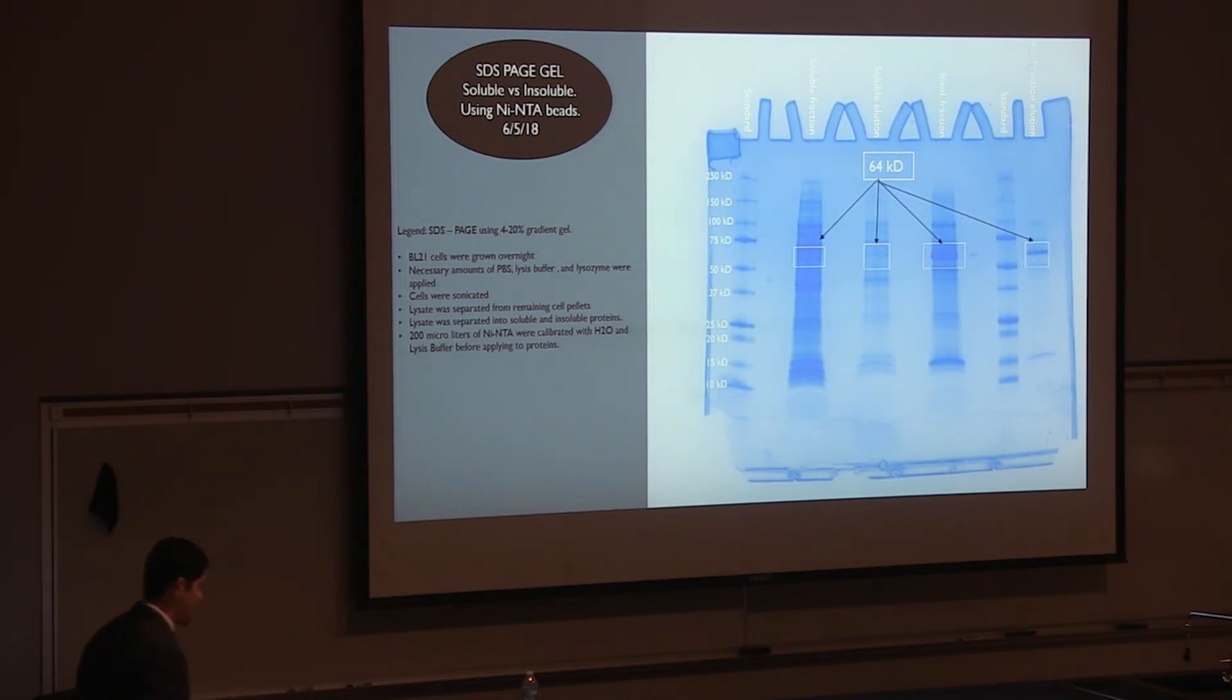In this experiment, we tried to separate the lysate into the soluble and insoluble fractions. Lysate refers to everything that is inside of the cell, soluble and insoluble. The first column indicates the standard of the masses for the proteins, the reference point. Column number 2 is blank. Column number 3 is all of the soluble proteins in the soluble fraction. And there is a very minor light band at 64 kDa. The weight of the protein, the mass of the protein that we are looking for is 64 kDa.